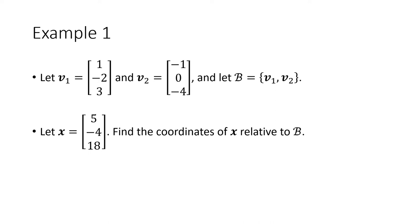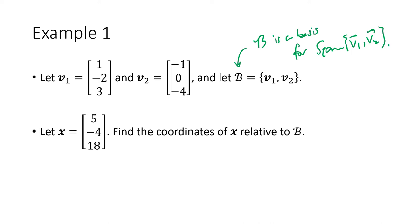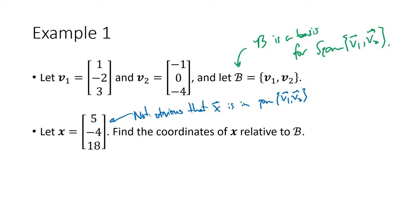Let's do an example. We have two vectors v1 and v2, and we let B — the set script B — be the set {v1, v2}. B is a basis for the span of v1 and v2. Since we can look at v1 and v2 and tell that neither is a scalar multiple of the other, the vectors are linearly independent and they obviously span the subspace. Note that it's not obvious that x is even in the span of v1 and v2 — that's not obvious at all just from looking at it, but it turns out that it's true.